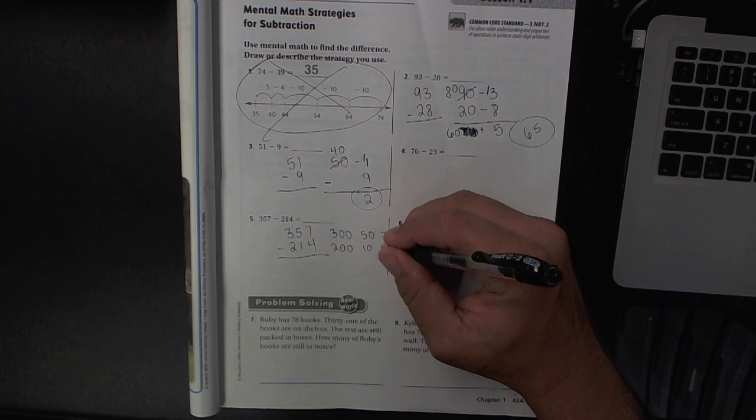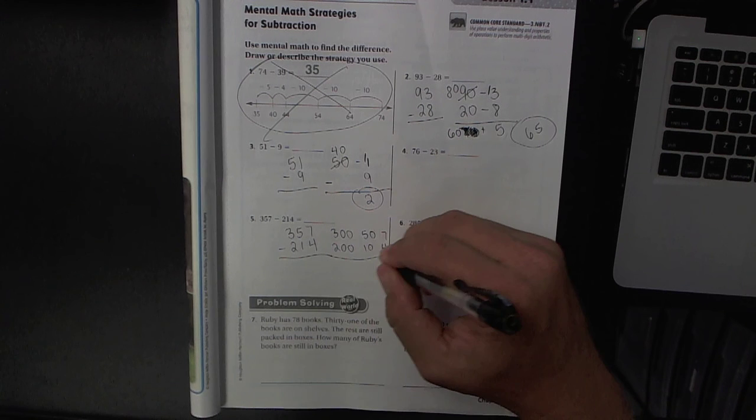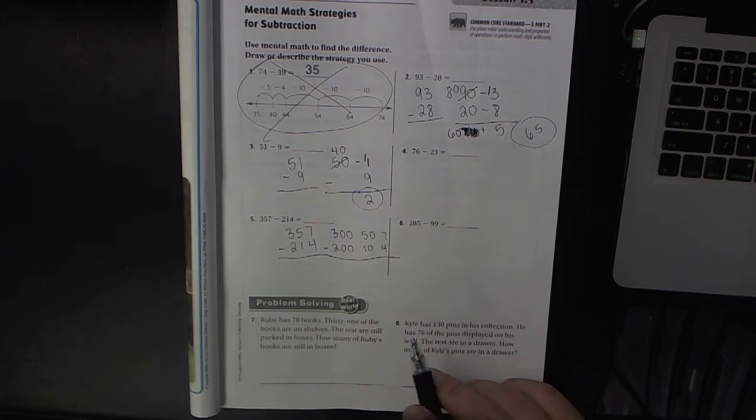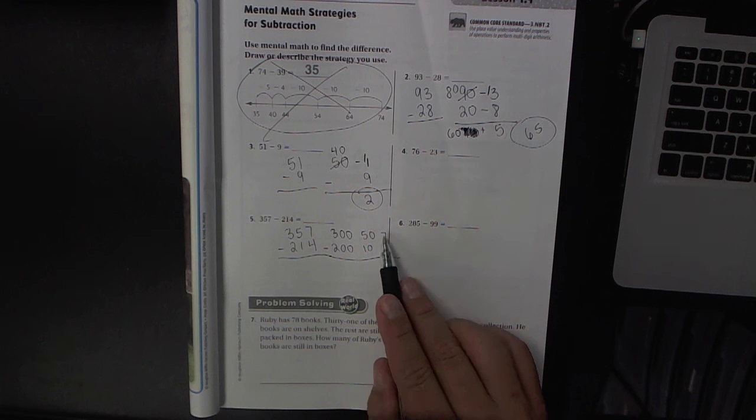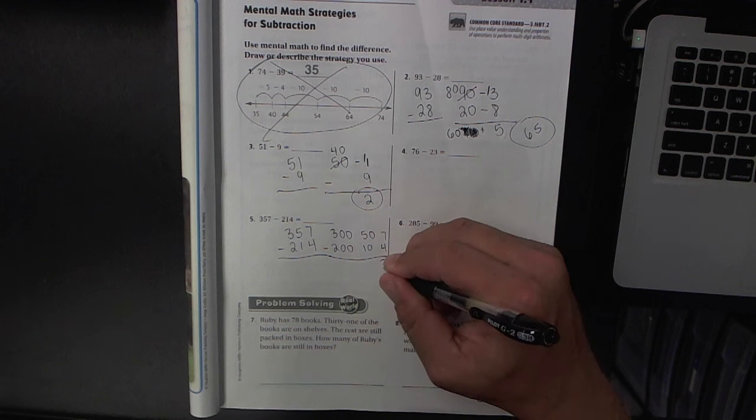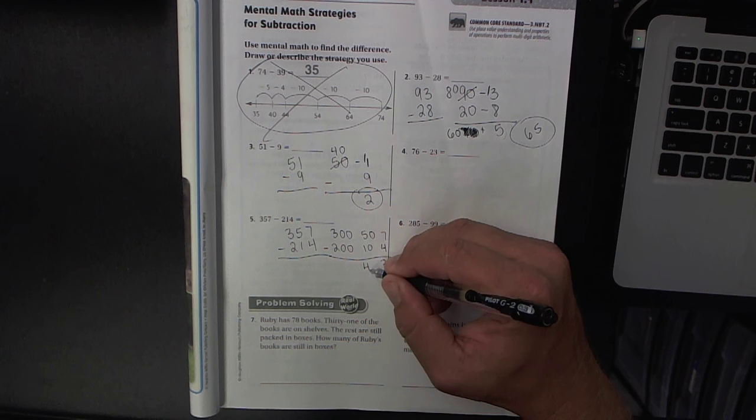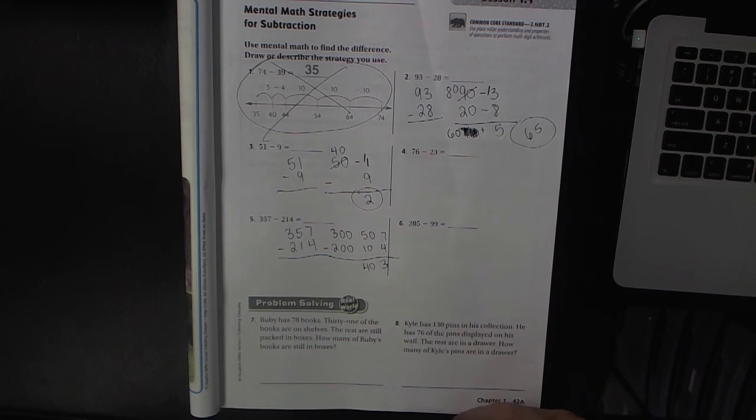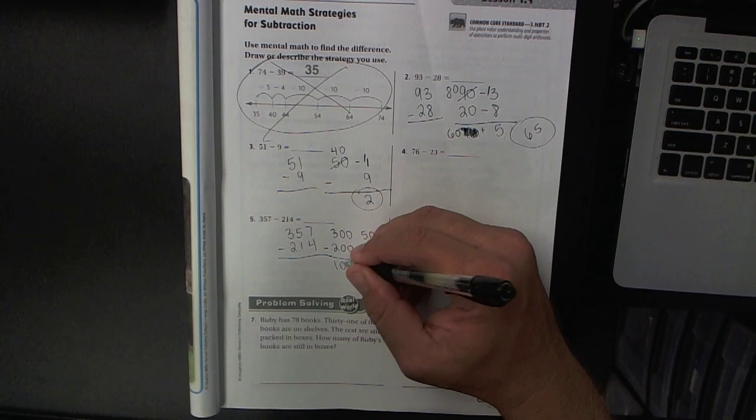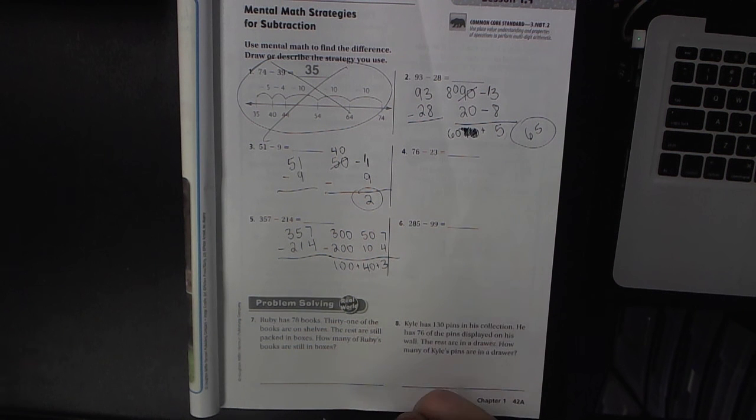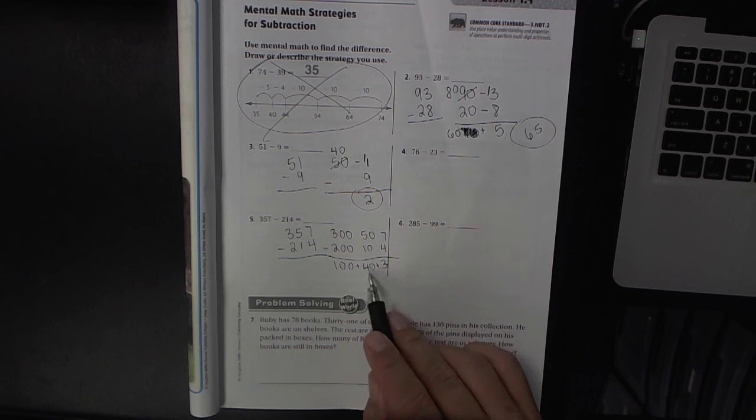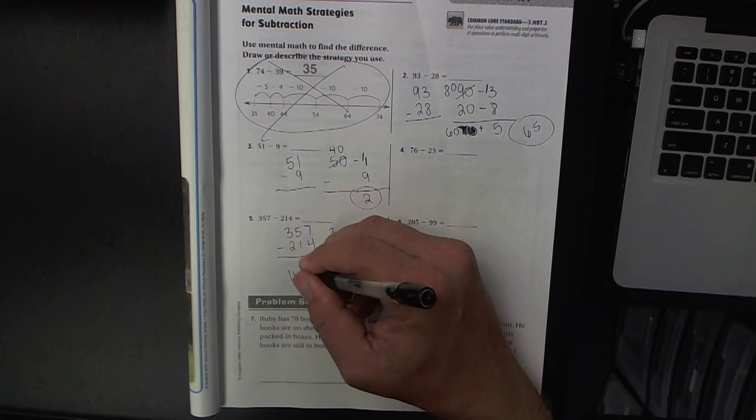You want to make sure you start on the right hand side and go that way. 7 minus 4 is 3, 50 minus 10 is 40, and 300 minus 200 is 100. You're gonna add up those last three digits: 100 plus 40 plus 3 is 143.